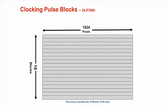For the DLP 7000 XGA device, there are 16 blocks that are 48 rows tall. This means that all micromirrors in a block are released and relatched simultaneously. Typically, the pulse is sent to all DMD blocks at once. This is called global mode.